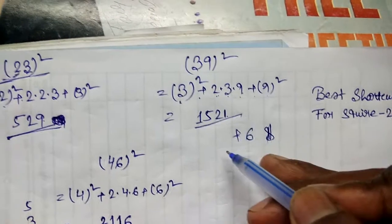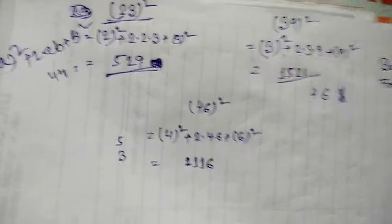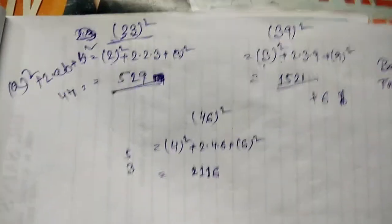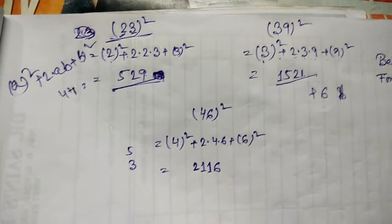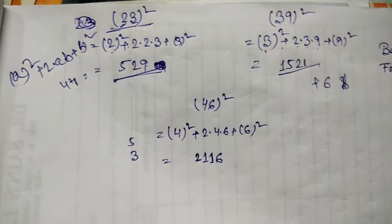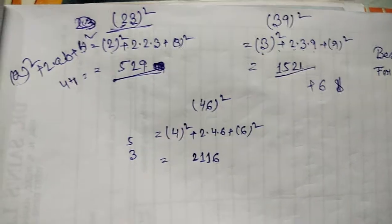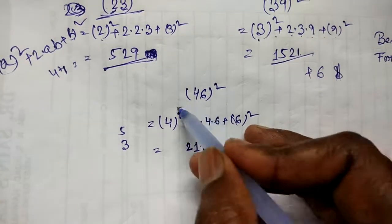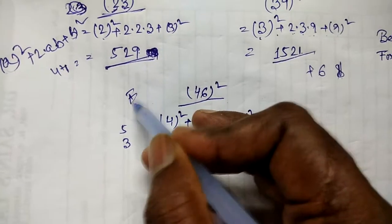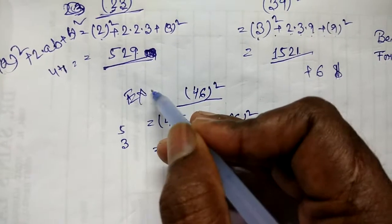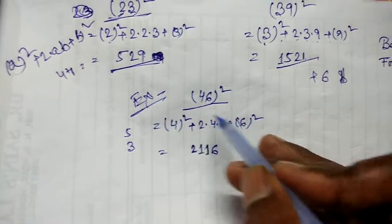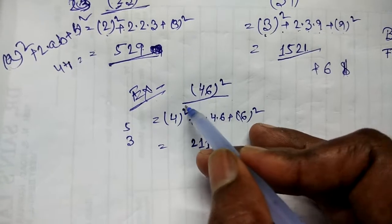So 39² = 1521. We've done two examples, and now let's go to another example. We take the number 46.